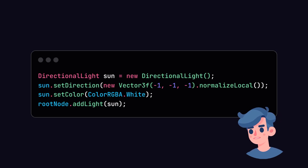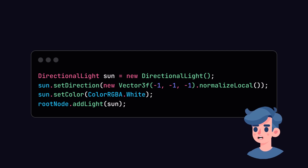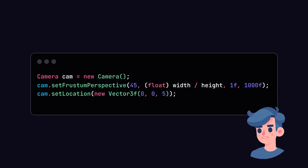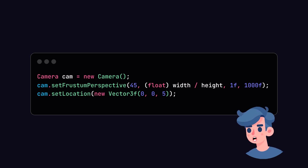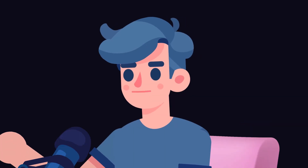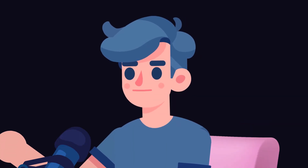To add lighting and camera functionality, you can use the following code snippet. The lighting will give depth to your rendered model. Finally, we need to create a camera to view our 3D model properly. Center it and set the correct perspective for a better visual experience.